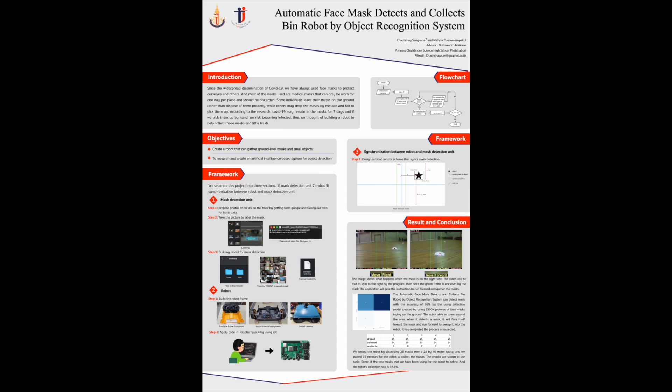The second section is building the robot. Step one, we build the robot from the frame based on a draft we drew, then put the motors and interior components in and install the camera. Step two, we apply code to control the robot. Step three, synchronization between the robot and the mask detection unit.